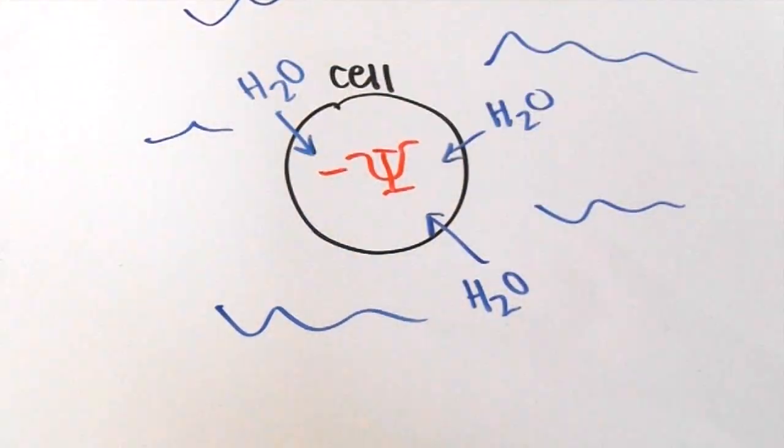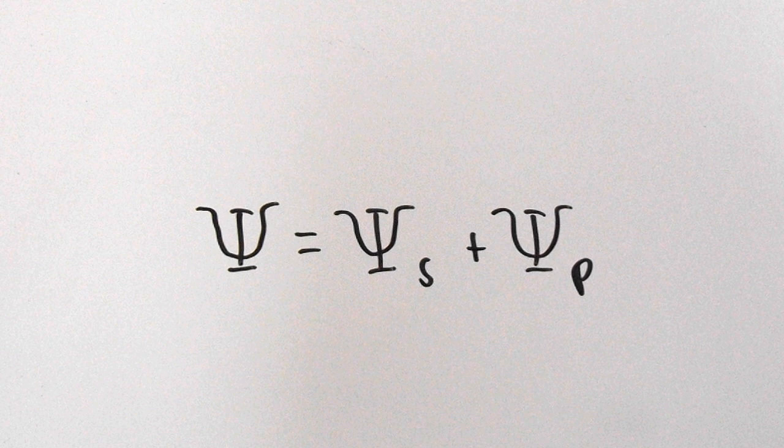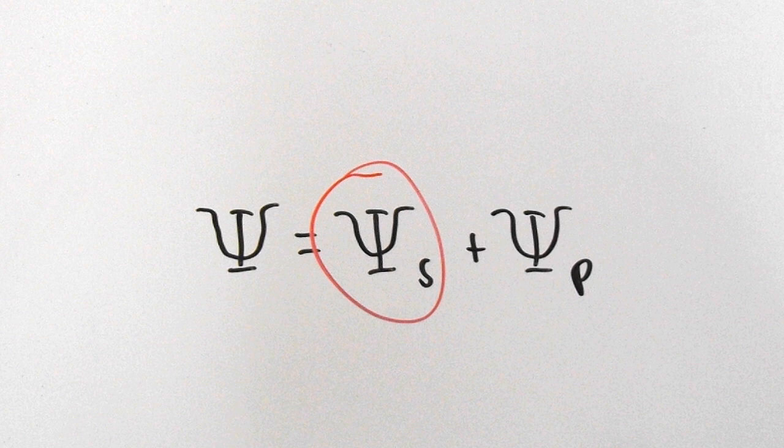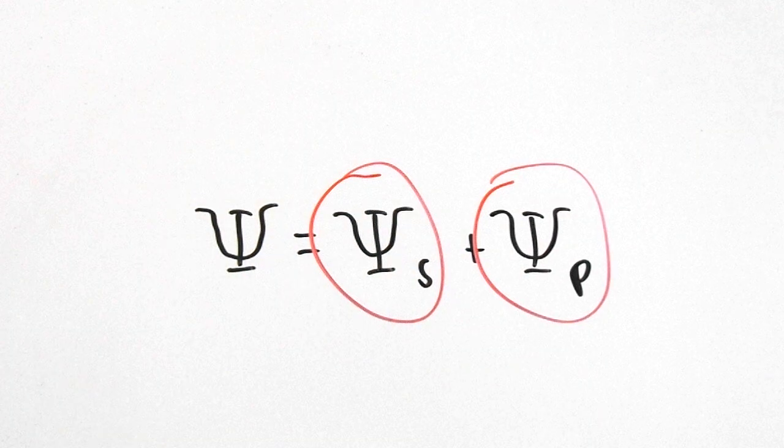Let's take a look at what this means according to the formula. It's pretty easy to understand. Solute potential tells us if there are any solutes in the solution and pressure potential tells us if there is any pressure acting on the solution.